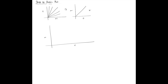If you plot sigma versus epsilon for structural steel — a ductile material, meaning it will appreciably deform before it fractures — you see something like this: a linear portion, then it curves a little, there's a slight dip, and then it rises before it fractures. So this is the general pattern for a ductile material, and there are different regions and zones you need to learn about.